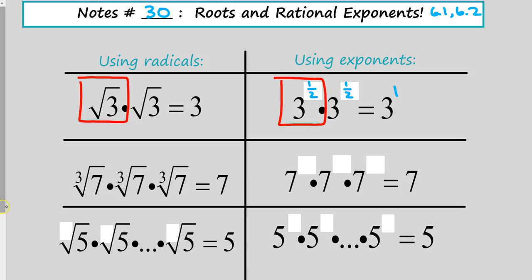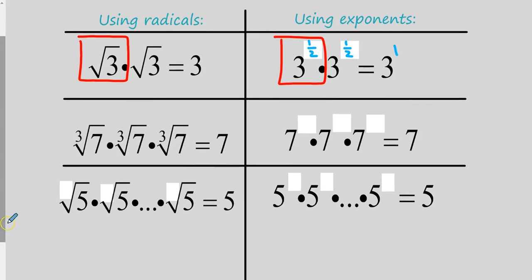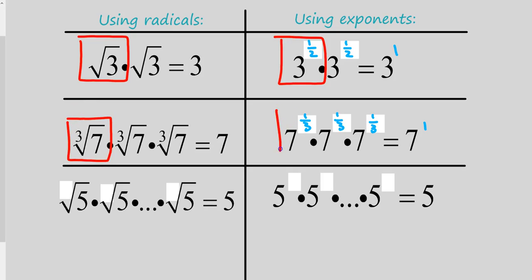Similarly, using other kinds of radicals: the cube root of 7 times the cube root of 7 times the cube root of 7 is 7. What exponent times itself three times gives 7 to the first? What plus itself plus itself equals 1? That would be 1/3. So the cube root of 7 is equivalent to 7 to the 1/3 power.